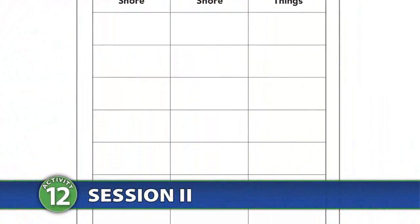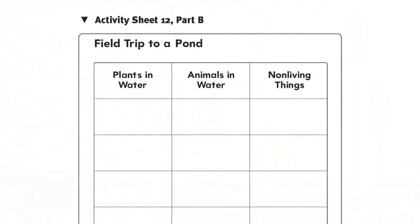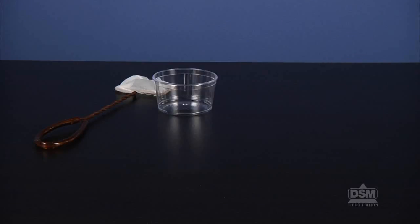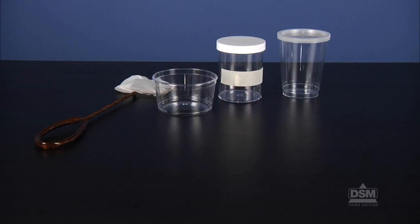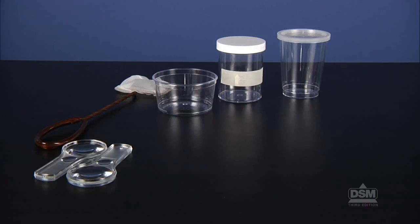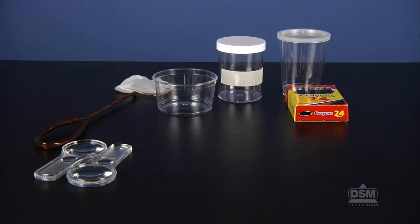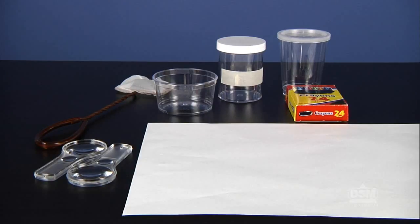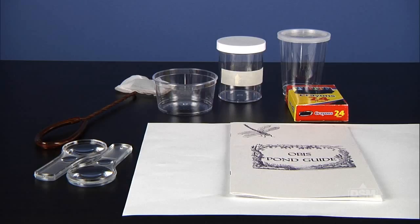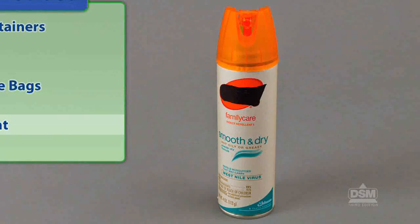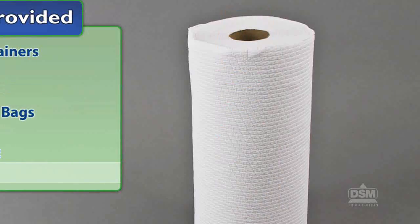To prepare for Session 2, make a copy of Activity Sheet 12, Parts A and B for each student. Each team of four will need one dip net, one plastic dish, one or two collecting containers, two magnifiers, some crayons, some paper, and access to the field guides. Have a first aid kit, insect repellent, and paper towels on hand.